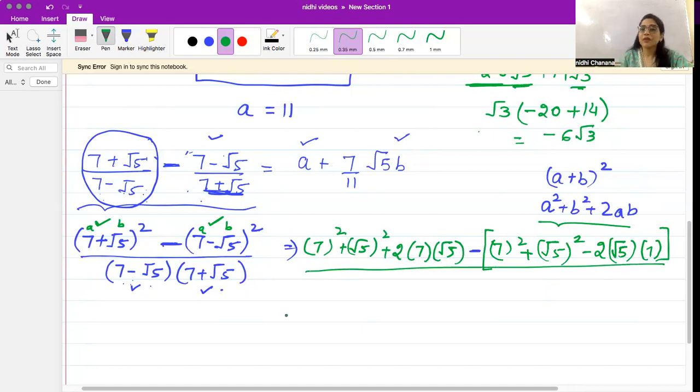Let's see the denominator. In the denominator we have the identity which is (a + b)(a - b), which is a² - b². So a² is 7² minus b² is (√5)². First of all we will solve our denominator because that is easy. 49 minus √5 squared - √5 multiplied with √5 gives 5. So this would be 49 - 5 which will give you 44.